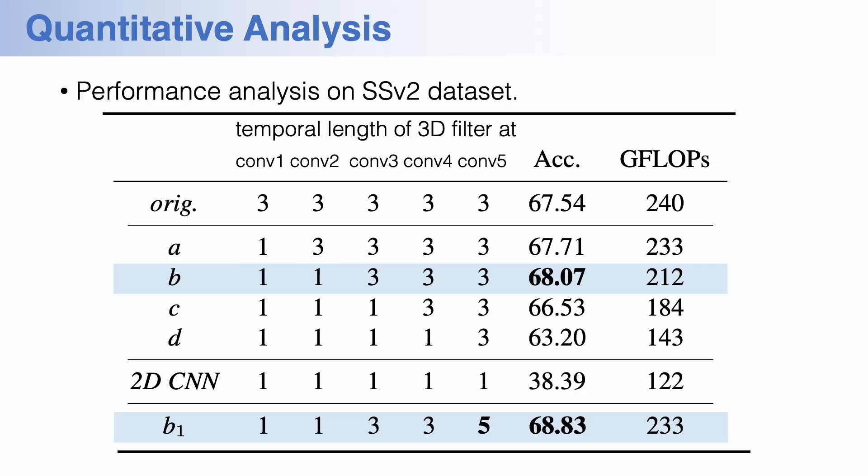We further validate the mechanism through empirical performance analysis. We measure the classification accuracy on something-something dataset. While the original model applies spatial temporal filters of three-frame temporal lengths, we change the lengths at each layer. Based on the analysis, we can set only one-frame filters at the first and second convolution block. It even improves performance. Then, by progressively enlarging the temporal length up to five frames, we attain good performance while reducing the computational cost compared to the original model. This quantitative analysis supports our findings.